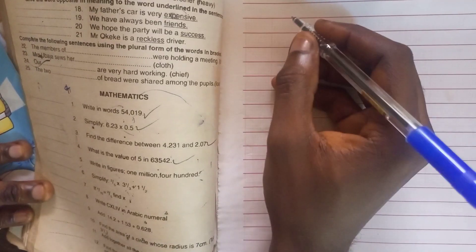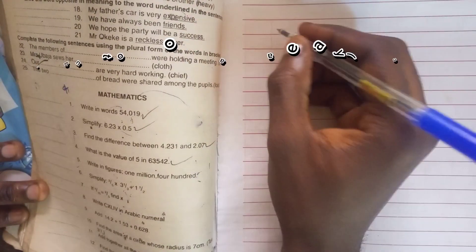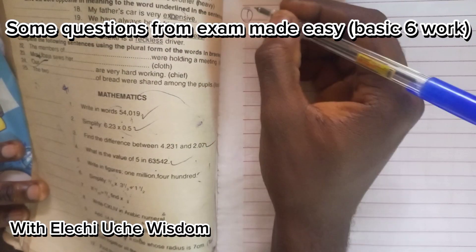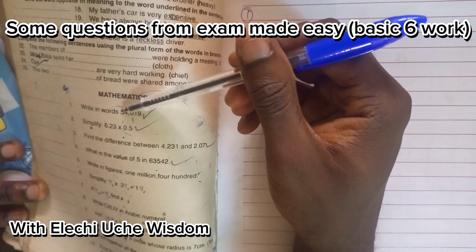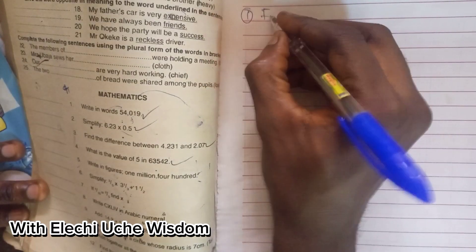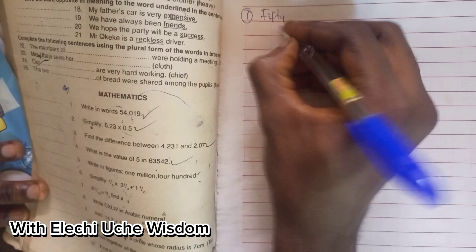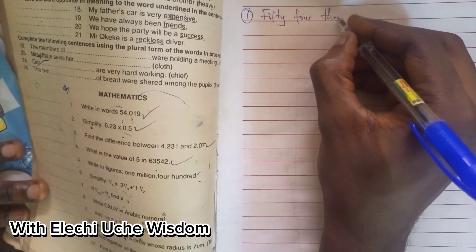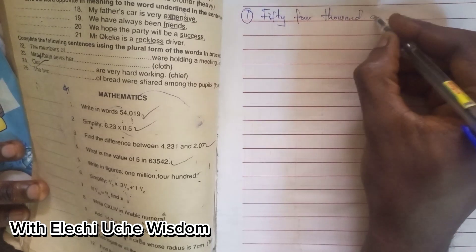Okay, let's solve some questions in Exam Made Easy. The first question is, write in words 54,019. So we write 54,019.